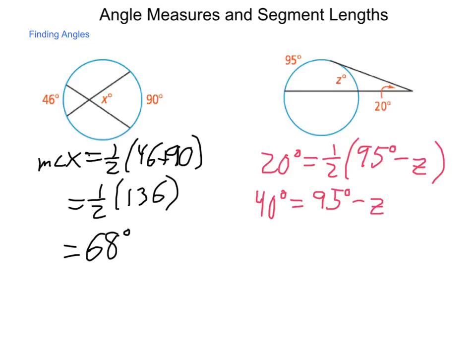Adding z to each side, we have z plus 40 degrees equals 95 degrees. And then subtracting 40 through subtraction property of equality, come out with z is equal to 55 degrees.